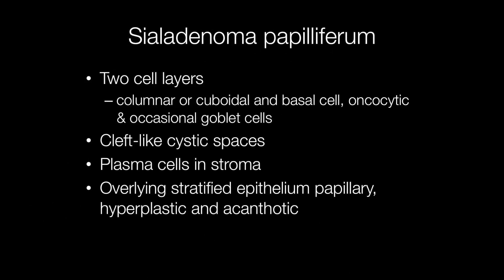Histologically, sialadenoma papilliferum has two cell layers: a columnar or cuboidal layer and an outer basal cell layer. In addition, oncocytic and occasional goblet cells may be present. The tumour forms cleft-like cystic spaces and the stroma typically has a dense plasma cell infiltrate.